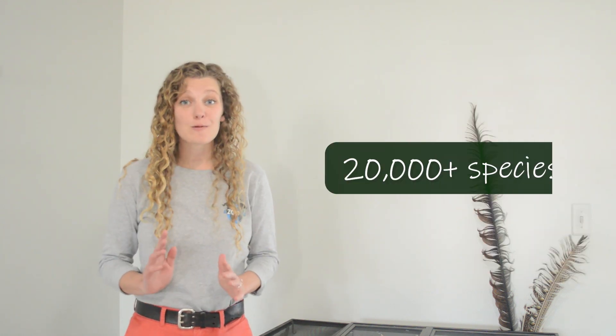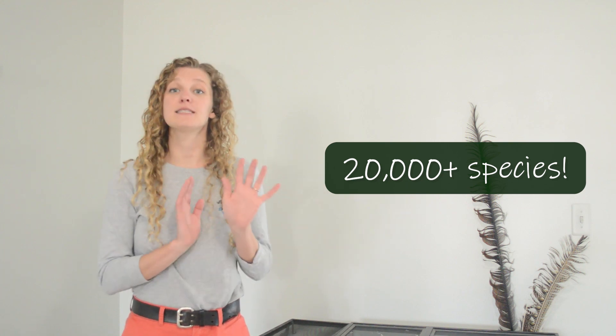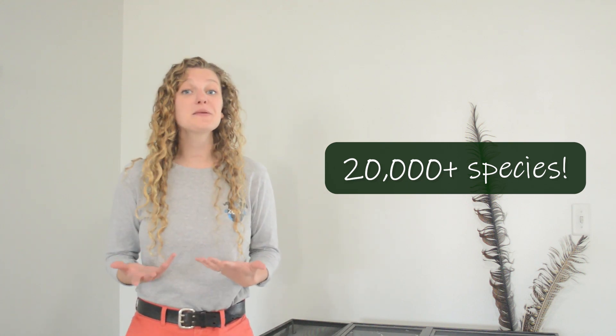Bees are insects and they're very closely related to wasps and ants. With more than 20,000 different species of bees, there are quite a few differences among them, but there are some things that bees all have in common.